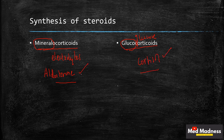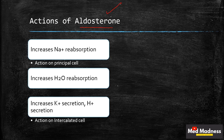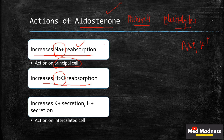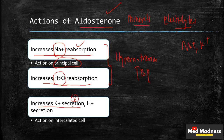Aldosterone is a powerful mineralocorticoid — it alters the electrolytes of the body, mainly sodium and potassium. It increases sodium reabsorption, acting mainly on the principal cells of the kidney tubules, and also increases water reabsorption. Because sodium is reabsorbed, water follows due to the osmolar difference. Overall there will be hypernatremia and increased blood pressure.